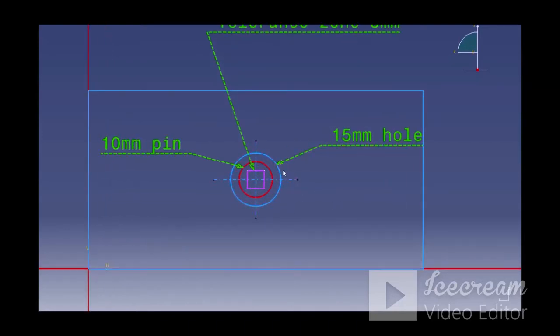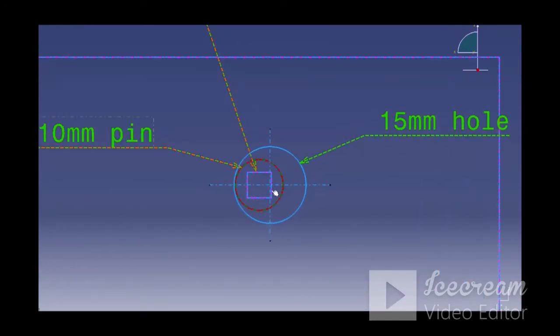So now I will move this hole into x-axis and you can see that the center of the hole lies within the tolerance zone and it is clearing this pin here.